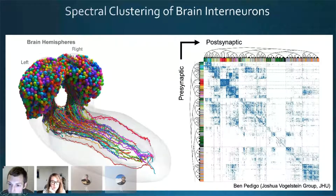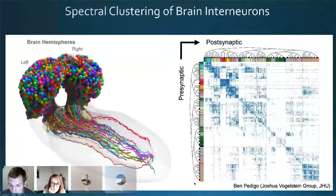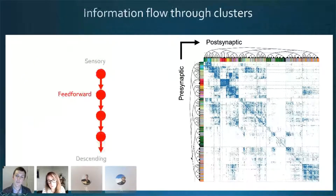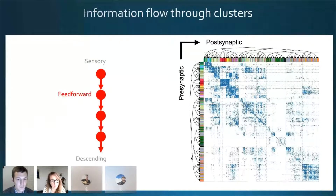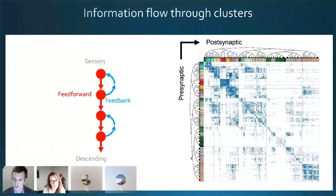The colors represent the cell types I previously described. We sorted these clusters from the sensory periphery at the top down through the brain towards the descending outputs at the bottom. Our first question was: how does information flow through these clusters, both in a feedforward sense — a chain from sensory input down to descending output — and in a feedback sense, back up toward the sensory input?